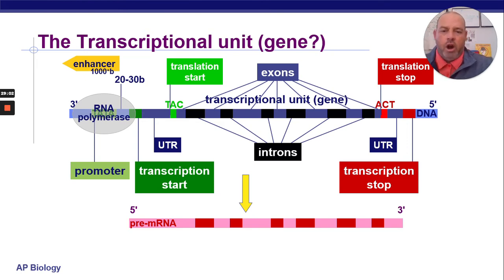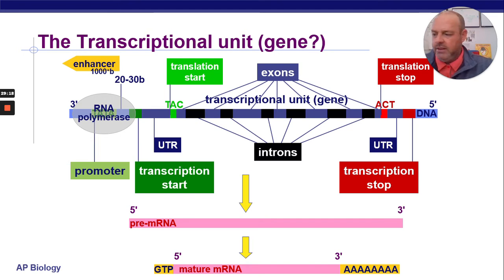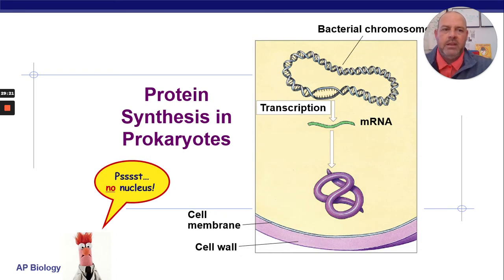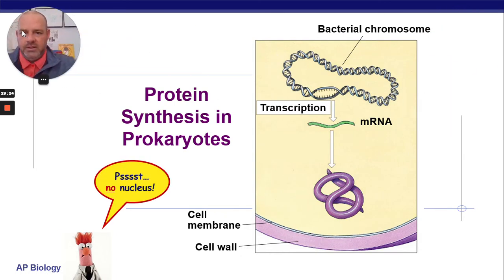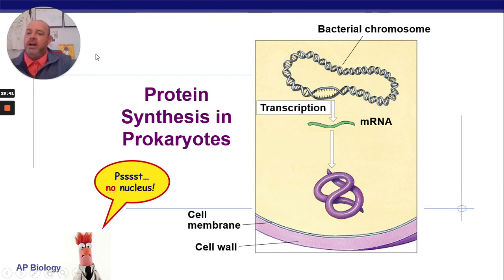We have our pre-mRNA transcript copied 5' to 3'. We get rid of introns through splicing to produce our mature mRNA transcript that moves into the cytoplasm — now with the GTP cap and poly-A tails. A side note on prokaryotes: no splicing, protein synthesis not in a nucleus, so it's a quicker process than eukaryotes.